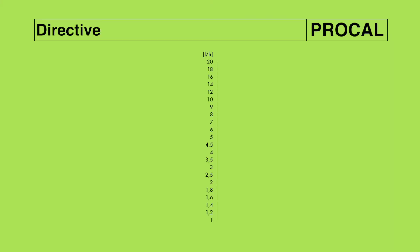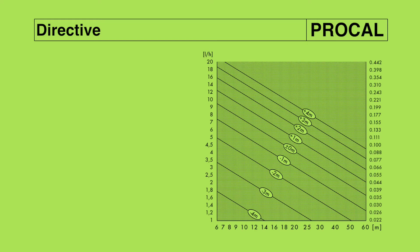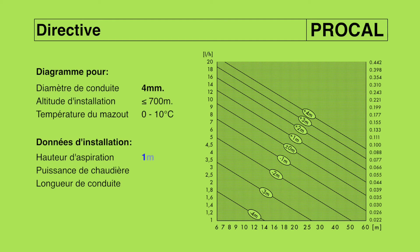A l'aide de la tabelle PROCAL, nous pouvons dimensionner la conduite mazout de manière juste. Si nous sommes en dehors de la tabelle, il faudra alors prévoir impérativement une pompe de transfert.